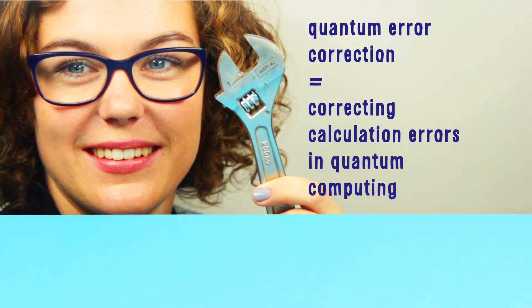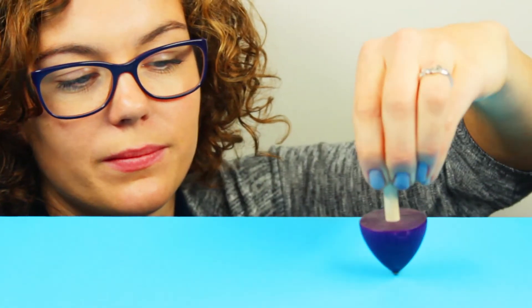Quantum particles can be in multiple states at the same time. Imagine that this spinning top was a quantum particle. Then it would be able to rotate counterclockwise as well as clockwise at the same time. That's what we physicists call a superposition.